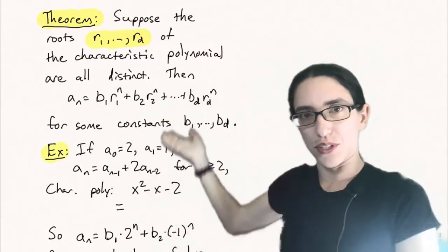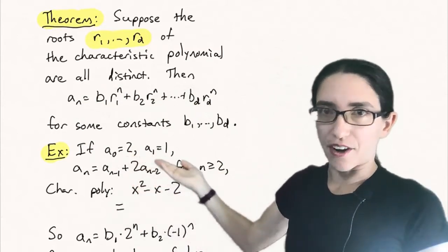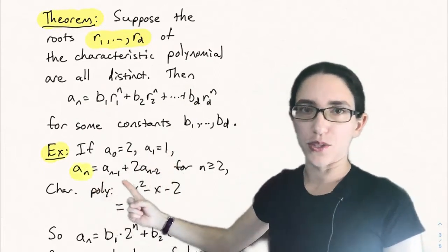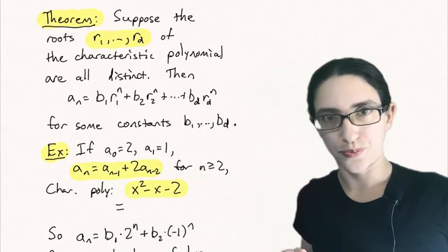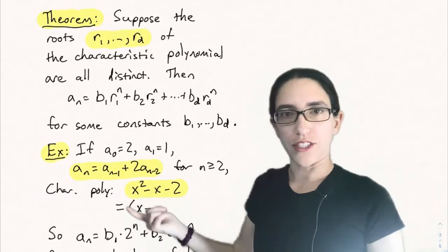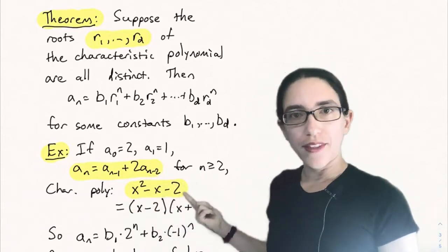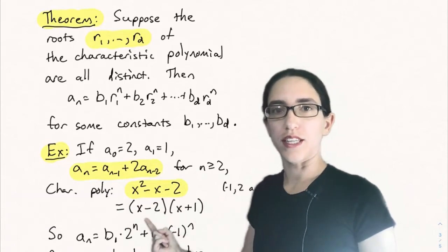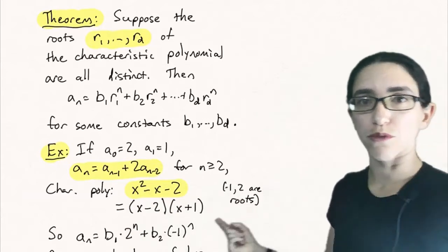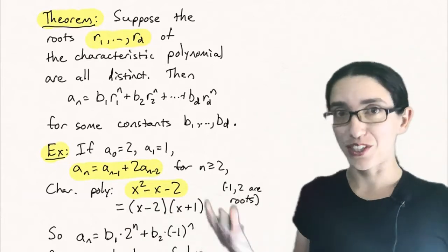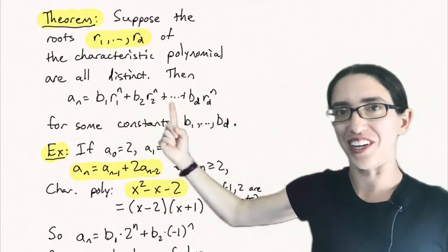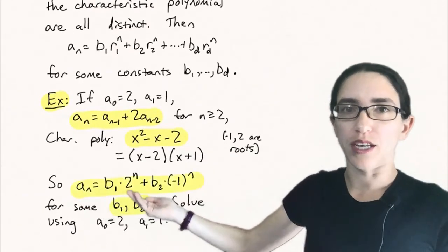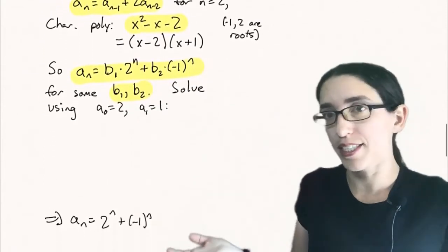Consider the sequence from the last quiz: a_0 equals 2, a_1 equals 1, and a_n equals a_{n-1} plus 2·a_{n-2} for all n greater than or equal to 2. The characteristic polynomial is x squared minus x minus 2, which factors as (x minus 2)(x plus 1). So the roots are 2 and -1, which are distinct, and we can use the theorem. So a_n equals b1 times 2^n plus b2 times (-1)^n.